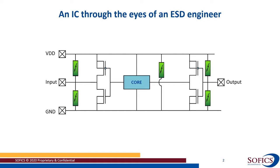In the remainder of the presentation, the inputs and outputs will be taken together as an IO, and we will abstract from the circuitry behind it. All the different green blocks indicate clamps or diodes for ESD protection, and the presentation will focus on these blocks.